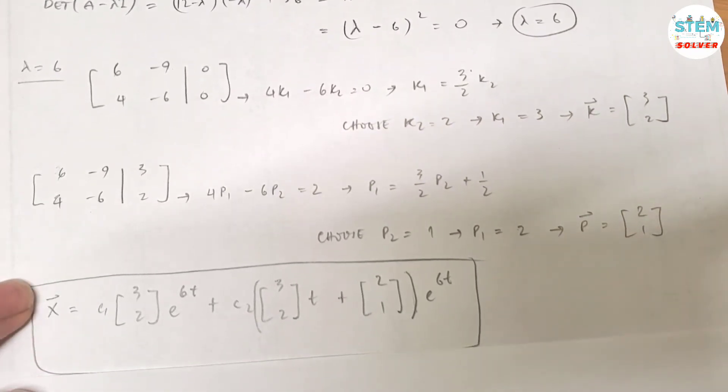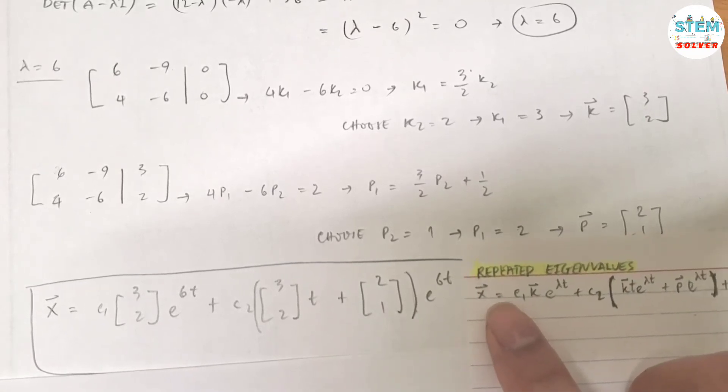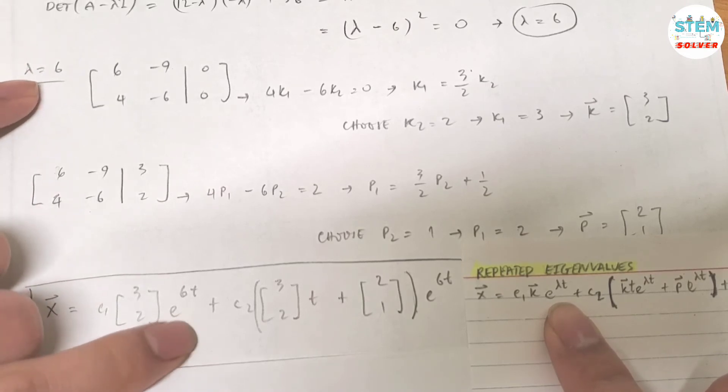So because you have repeated eigenvalues, your final answer will be given in this form. Vector x equals c1 times k, vector k, which is 3, 2, e to lambda t, which is e to 6t.